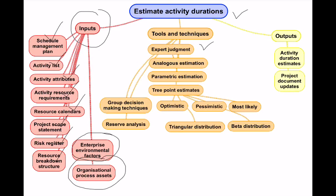Expert judgment is a tool and technique used when arriving at activity durations. Analogous estimation is about comparing with a similar past activity and using that as a basis. For example, if last year I traveled from here to Ooty and it took 10 hours, then this year I'll budget 10 hours for the same journey — that is analogous estimation.